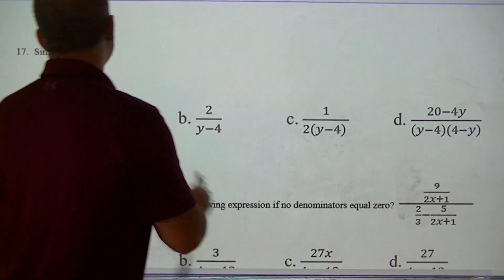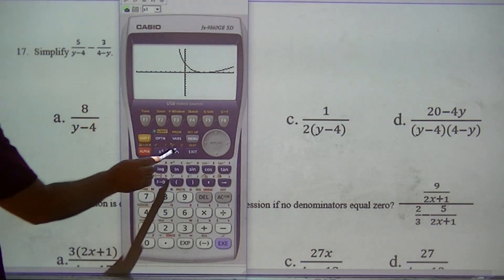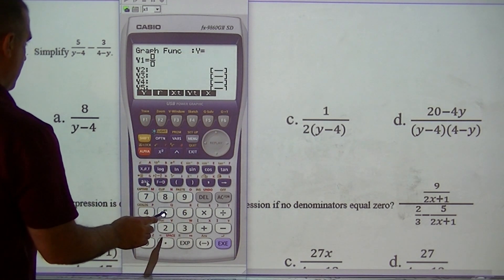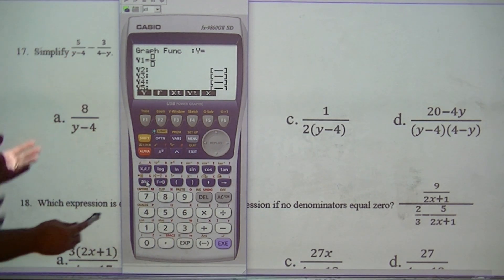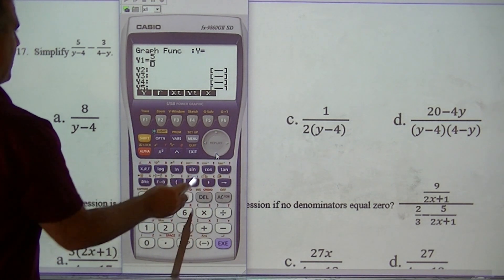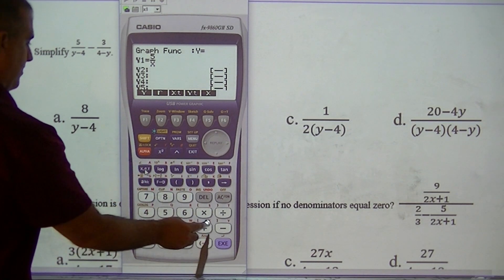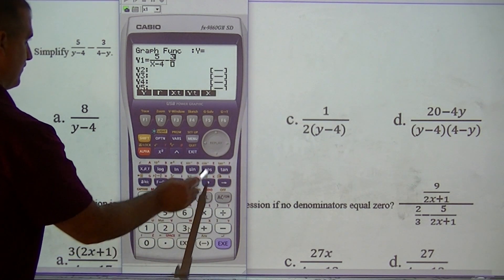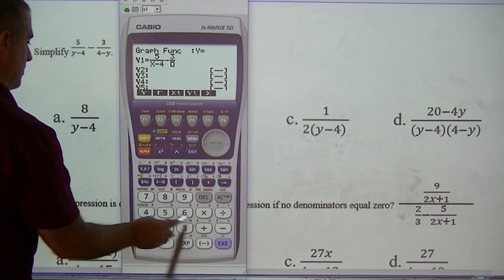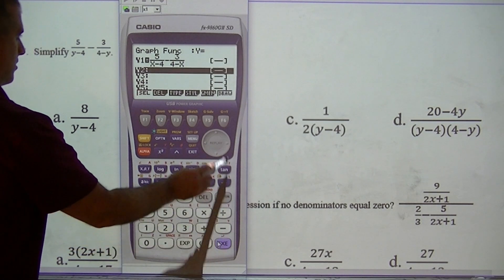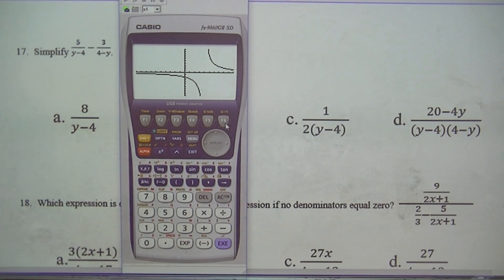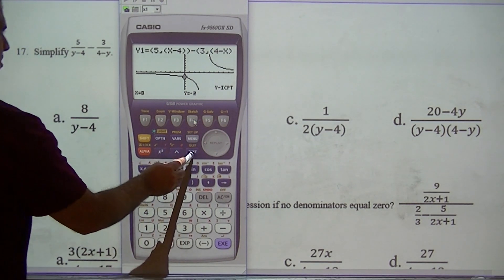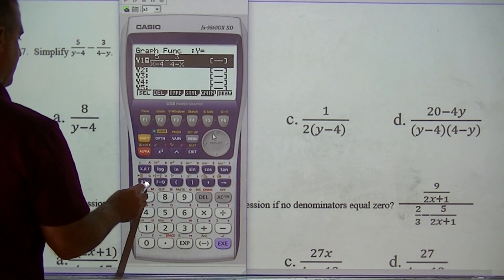Moving on to the next one. I'm going to go ahead and type the fraction in. Now instead of y, you can transpose and use x. So that's what it looks like. G-solve y-intercept is going to be at negative 2. And let's take a look at the answers.